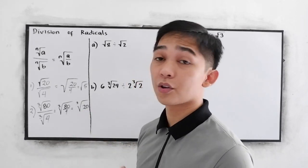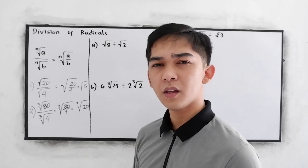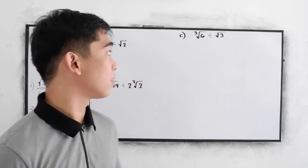If it has a factor of perfect cube, then we can simplify that. Now, let's have the following examples.